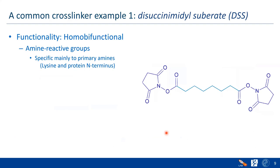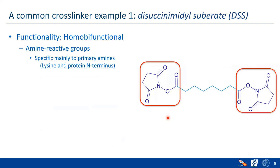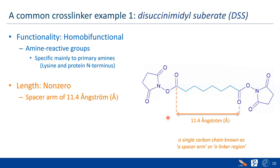Let's look at an example. One of the commonly used cross-linkers is called DSS. It's homo-functional and bifunctional because it has two identical arms targeting the same group — amino-reactive groups. These primary amines are found in lysine residues and protein N-termini. It's non-zero because the two reactive groups have a carbon chain between them of 11.4 Ångströms. And it's non-cleavable because we don't have any labile bond in the spacer arm, so it remains intact in MS measurements.